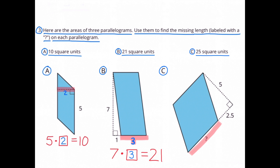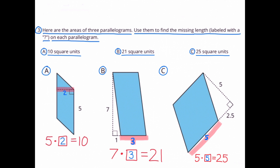The area for figure C is 25 square units. The height is 5, and the base is unknown. 25 divided by 5 is 5, or 5 times 5 is 25. The measurement for the missing base is 5 units.